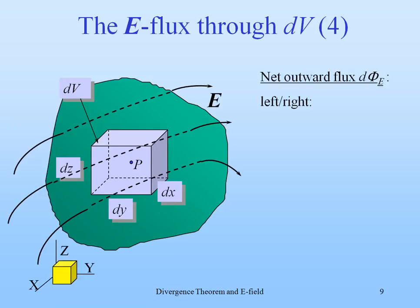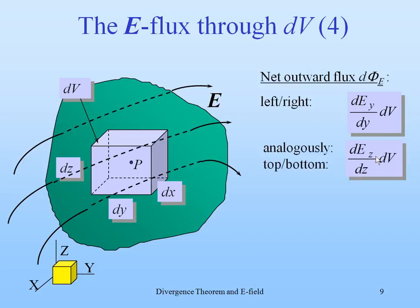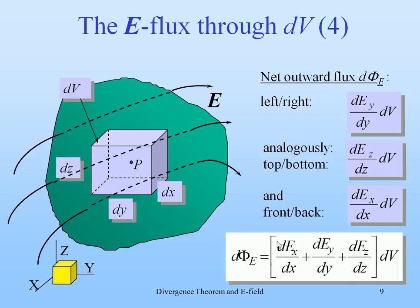So, in general we have the net outward flux through the left and right sides. That was the slope in that direction times the volume element. And analogously, we can do that for the top-bottom sides. That gives you the slope in the z direction times the volume element, and the front-back in the x direction. And in total, it will be the sum of the derivatives to x, y, and z of the electric field times the volume element.